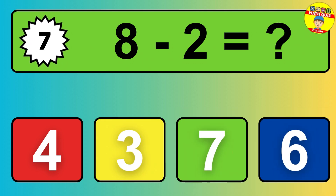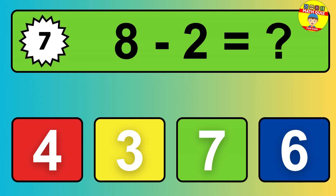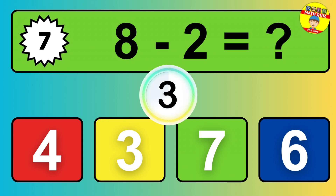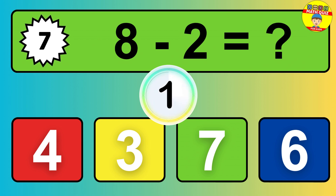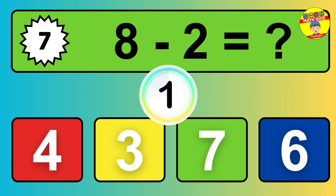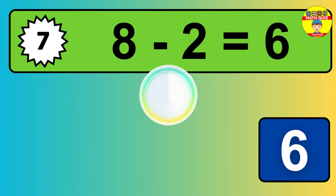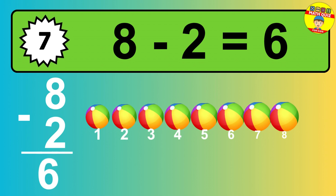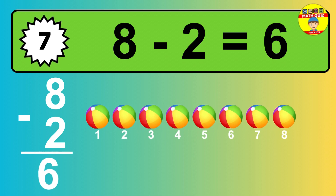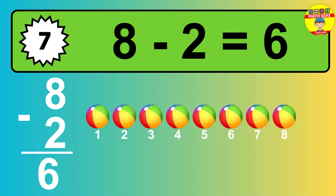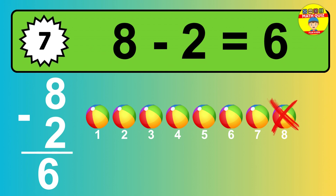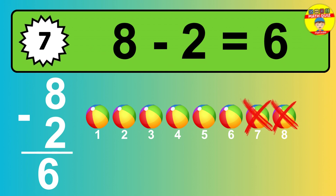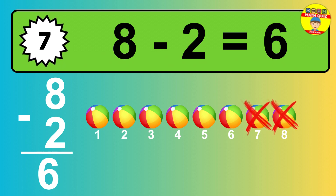Question 7: 8 minus 2 equals what? The answer is, 8 minus 2 is 6. Let's count it: 1, 2, 3, 4, 5, 6.